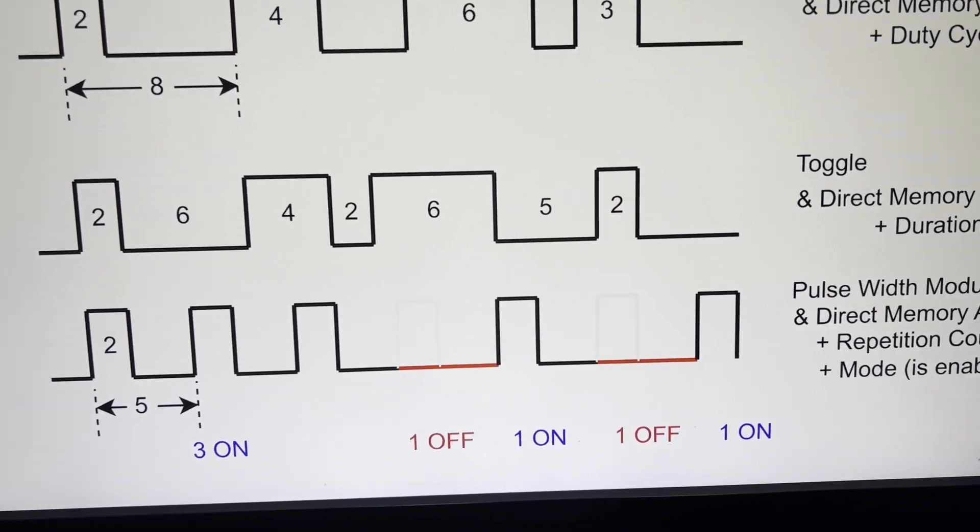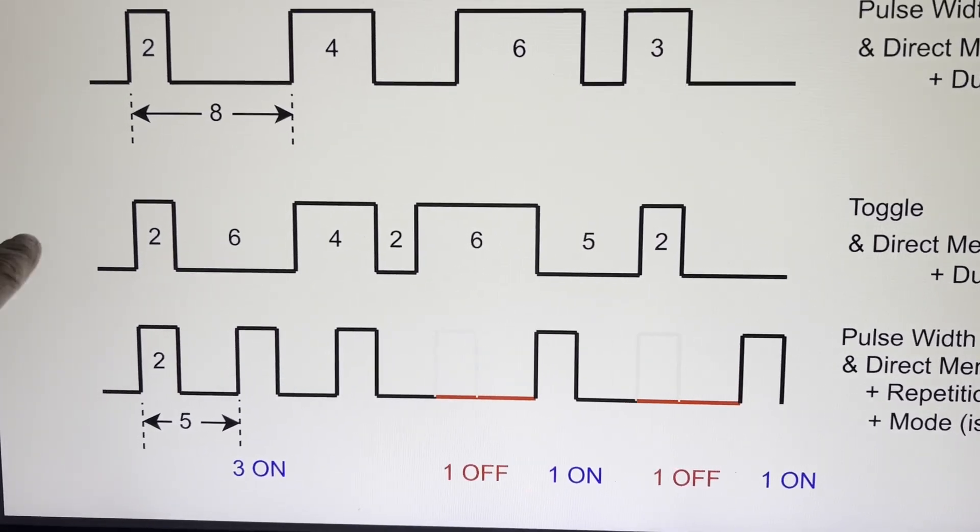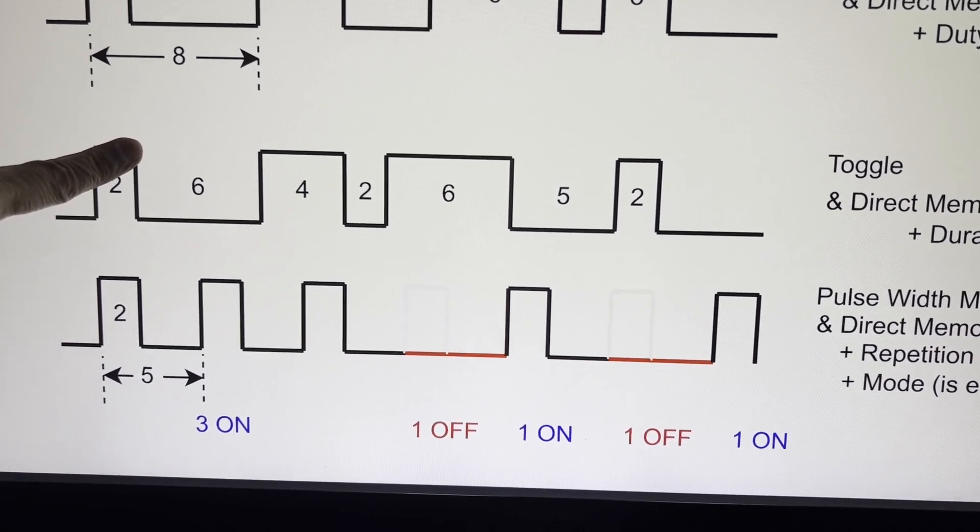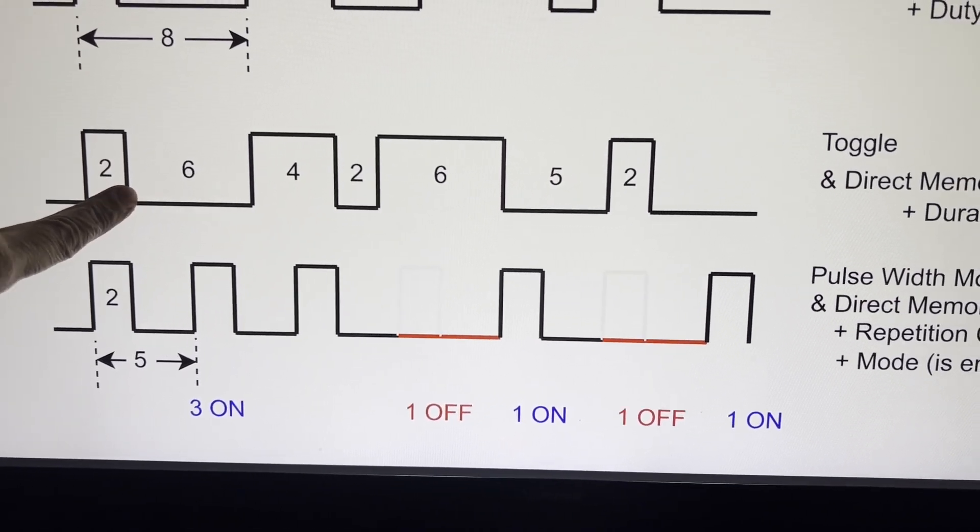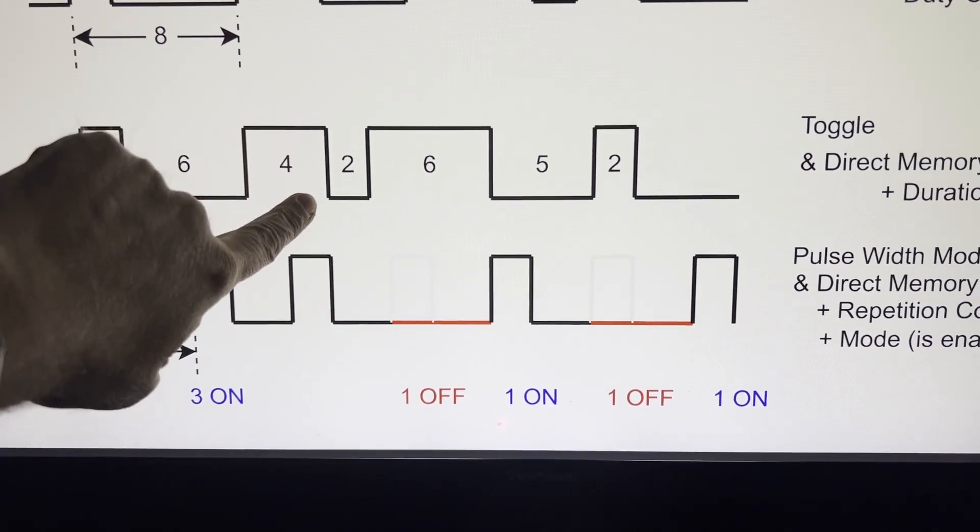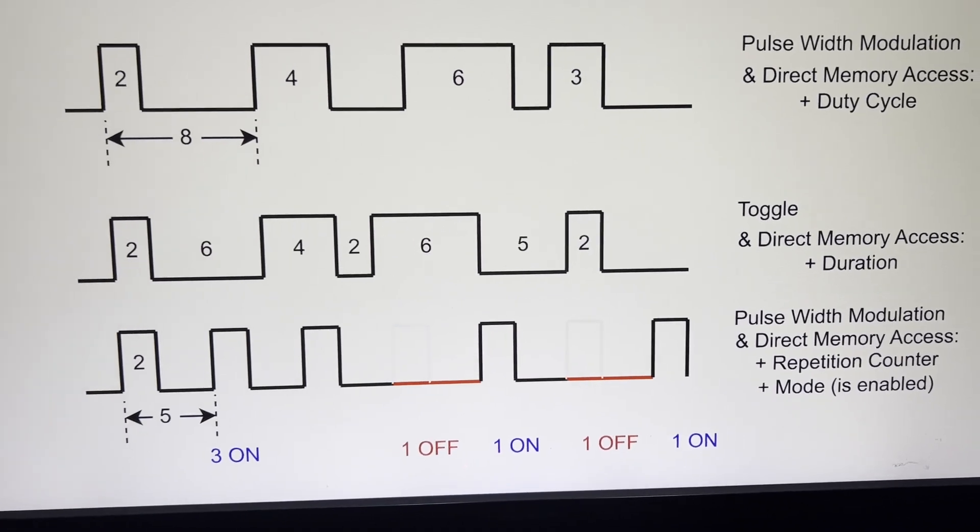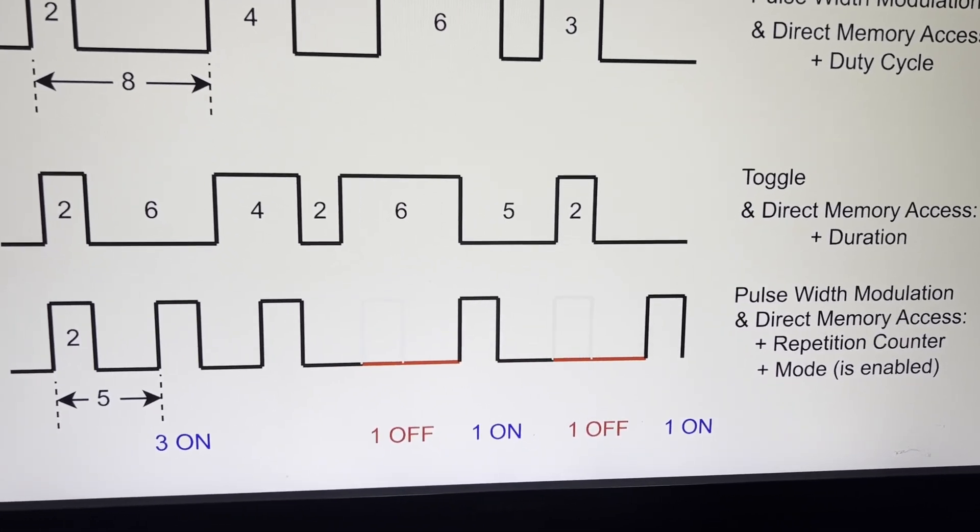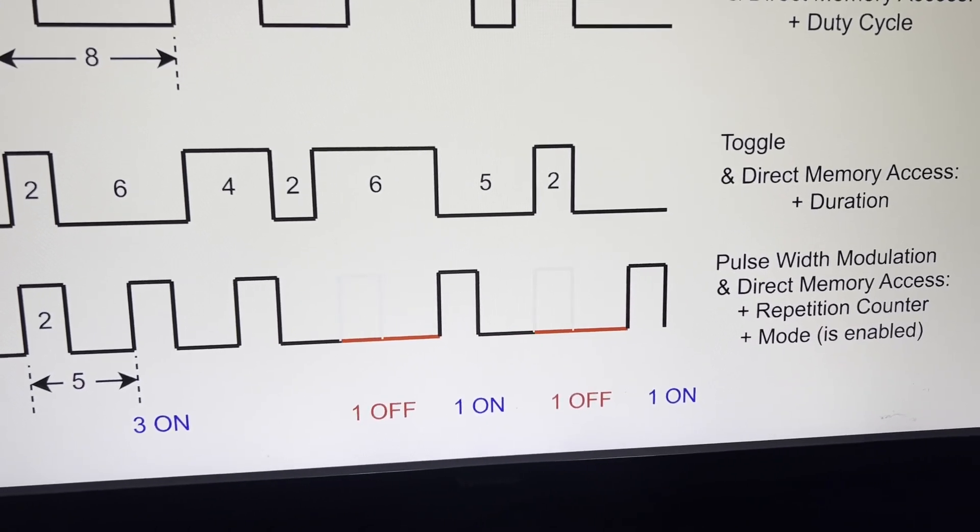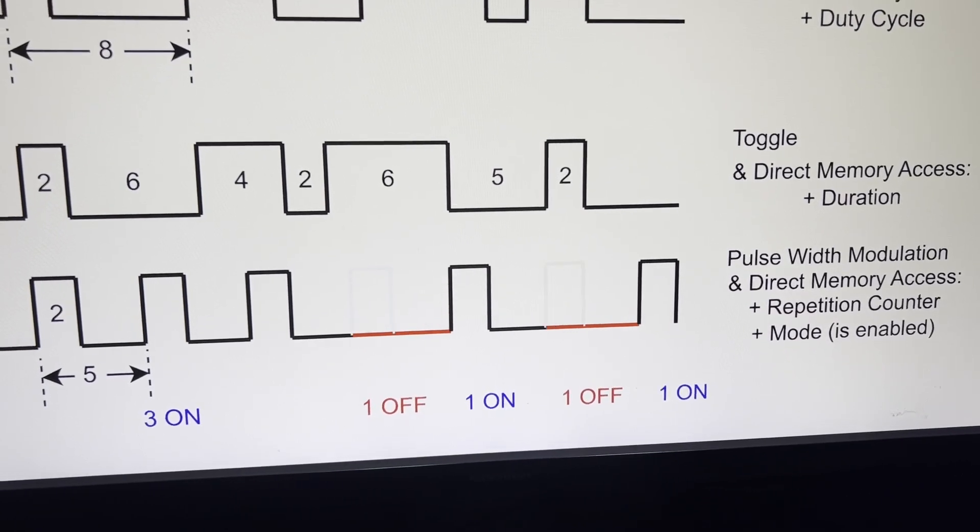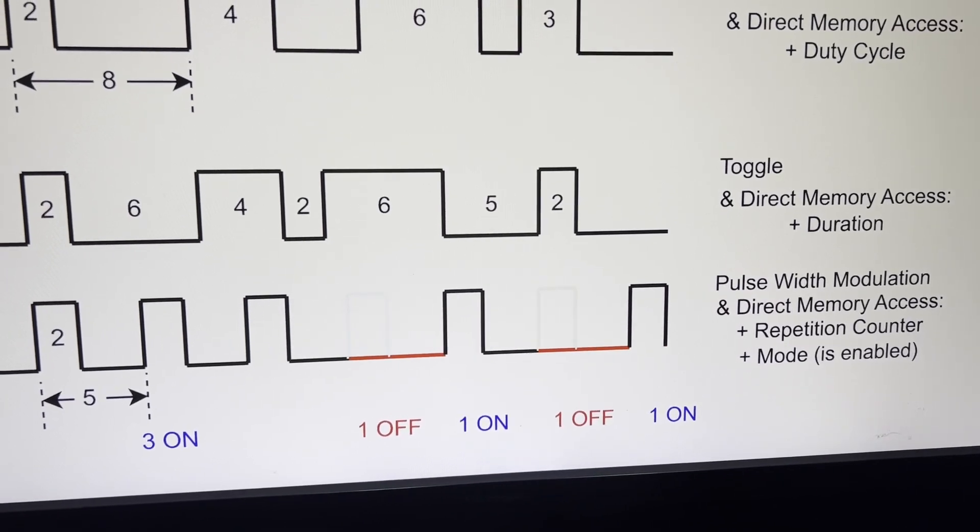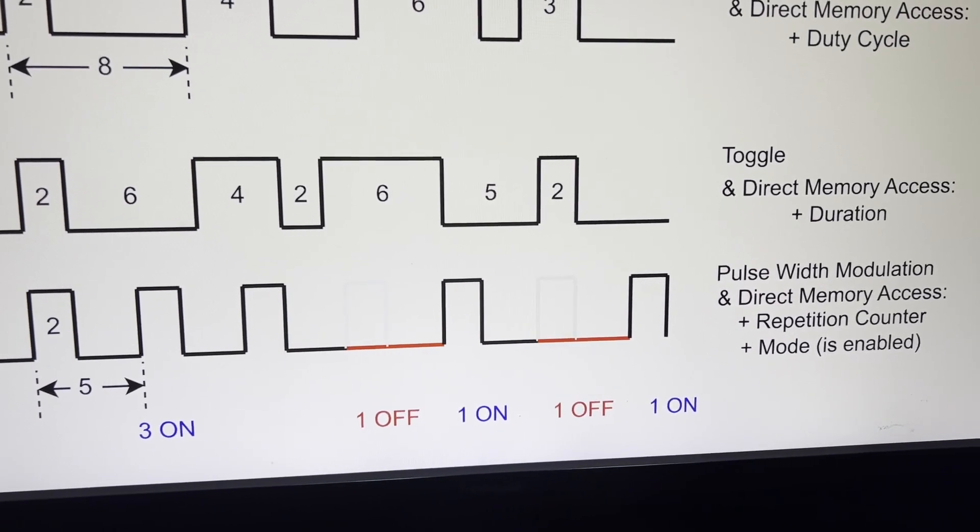Another common technique called bit banging, and basically what you do is you output a high on the pin, and then you sleep for two units of time, and then you output a low on the pin, and you sleep for six units of time, and then you output a high, and you sleep for four units of time, etc. So bit banging is another technique that accomplishes the same thing. The disadvantage is that with bit banging, your process could potentially be interrupted by some other higher priority process. And with timers, you basically send all the information to the timer, and it's offloaded. And if you get interrupted, it'll still send the signal with the right timing.